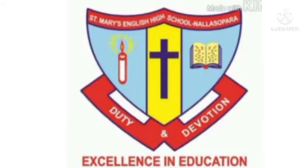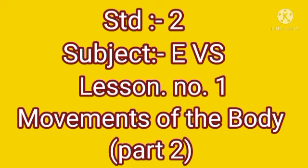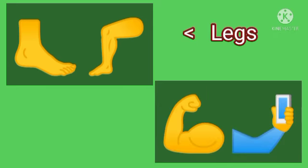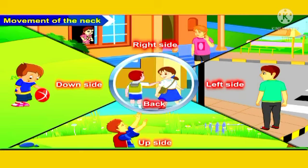Welcome students. Standard 2, EVS, lesson number one: Movements of the Body, Part 2. In the previous video we studied about movement of legs and movement of the arms, so we will continue further. Third point: movement of the neck. We use our neck to look towards the right side, the left side, up, down, and a little towards the back.